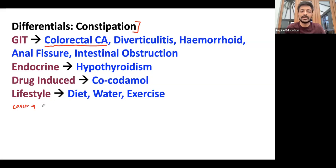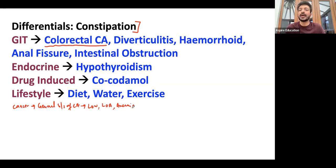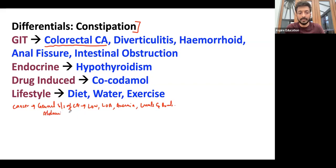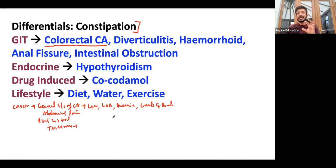For colorectal cancer, ask the general signs and symptoms of cancer that everybody knows: loss of weight, loss of appetite, anemia symptoms like shortness of breath, dizziness, and palpitations. You can ask about lumps and bumps as well. Ask about abdominal pain, blood in the stool, and another very important symptom — tenesmus — which is the incomplete evacuation of stool.